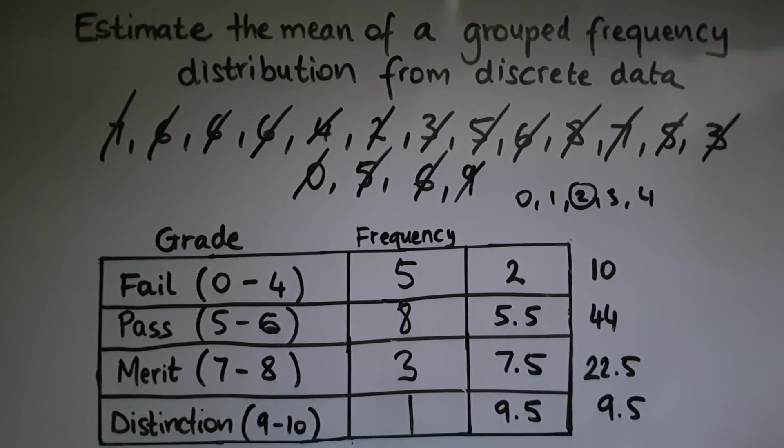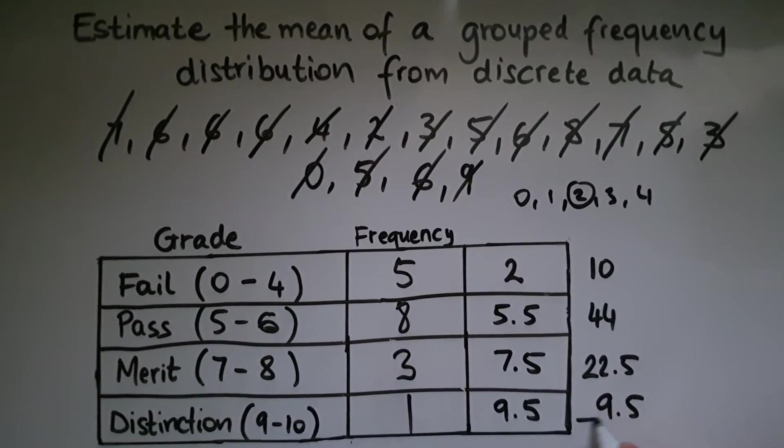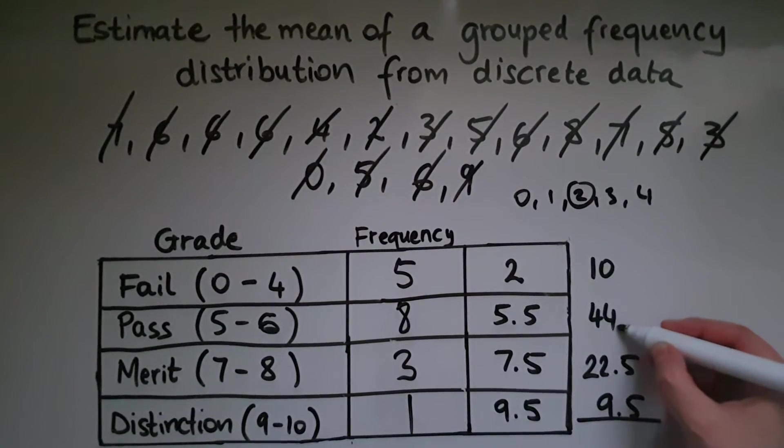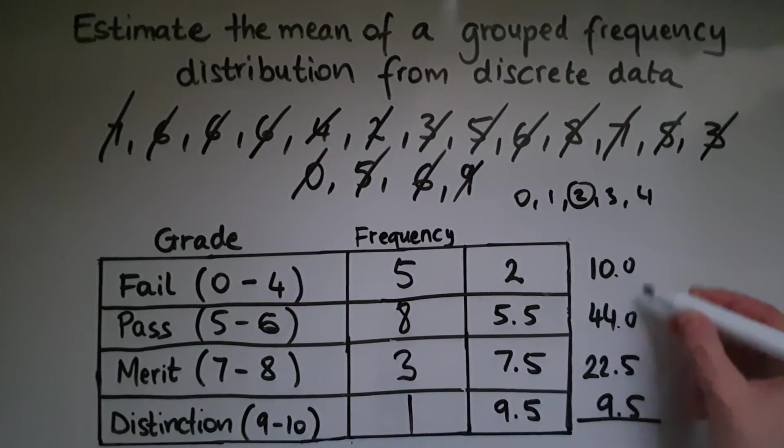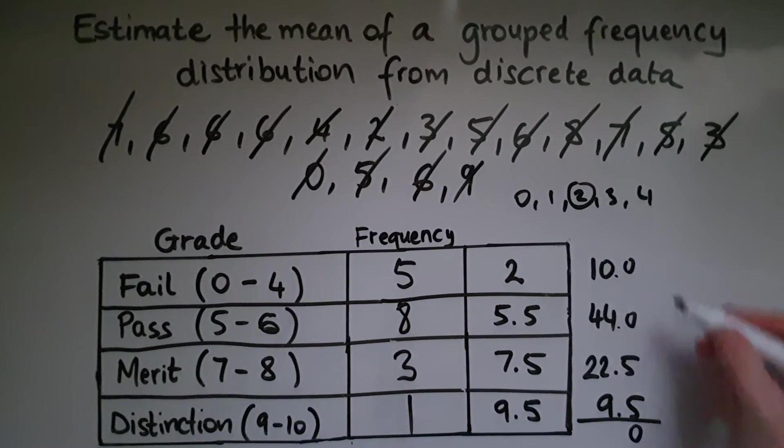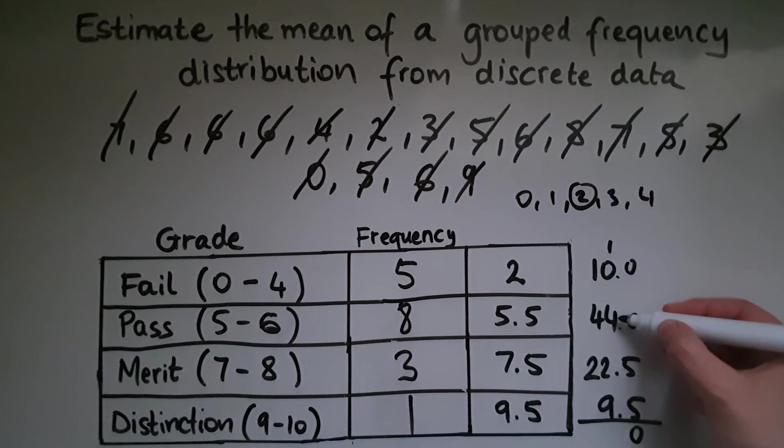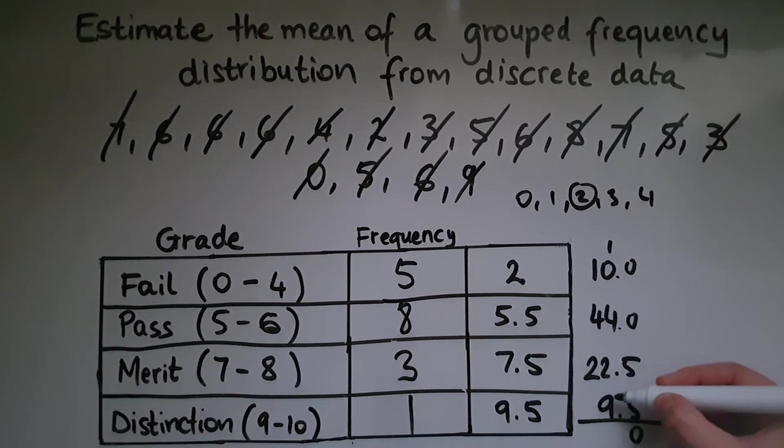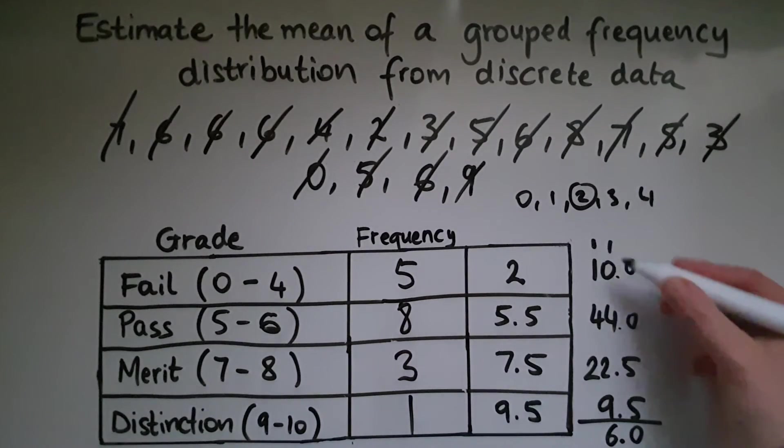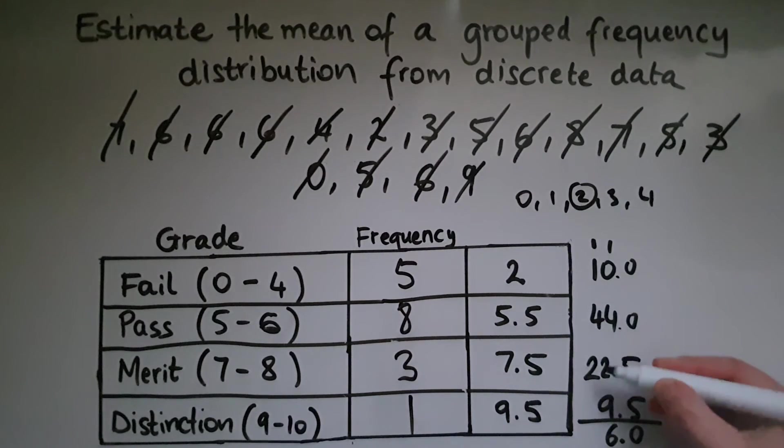So we'll add all of these together. So we have 10, 1 carried over, 1 and 4 is 5, and 9 is 14, and 2 is 16. 1 and 1 is 2, and 4 is 6, and 2 is 8. So it's 86 the total.